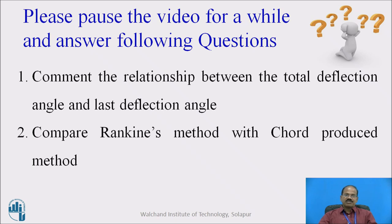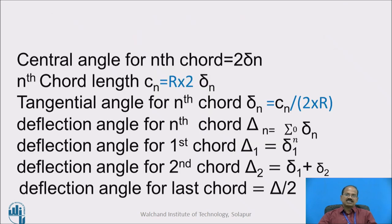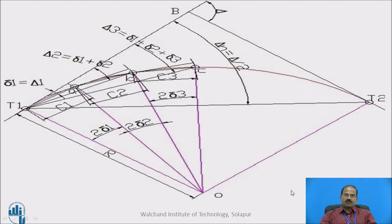The relationship between the total deflection angle and the last deflection angle was shown in the earlier slide: the deflection angle for the last chord equals capital delta by 2. So capital delta n equals capital delta divided by 2, which is the relation between the total deflection angle capital delta and the last deflection angle.